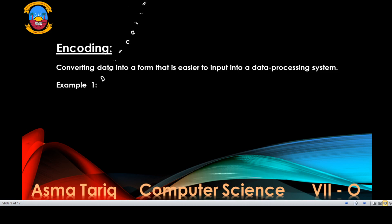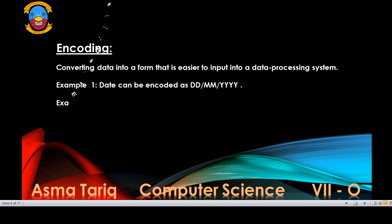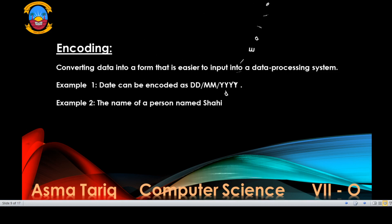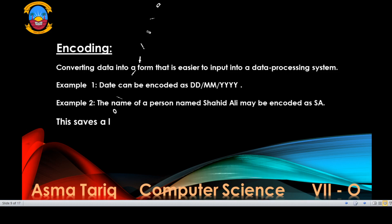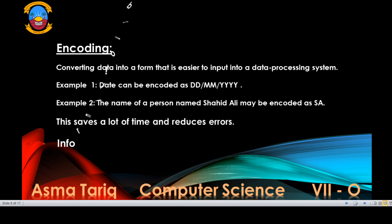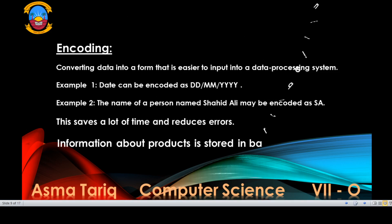In one example, data can be encoded as DDMMYYYY. In another example, the name of a person named Shahid Ali may be encoded in short form as SA. Encoding is used to save a lot of time and also to reduce errors. The information about a product stored in a barcode is another example of encoding.